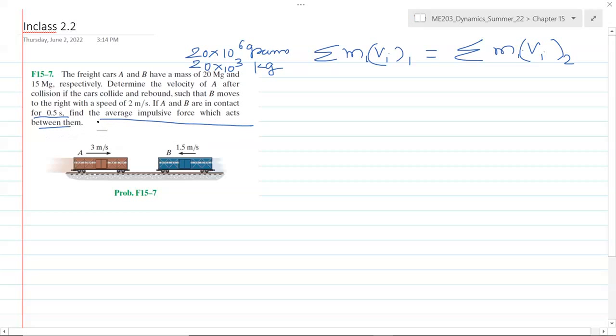There are two parts to the question. Part number one: we've been given v_A1 and v_B1, the velocities or speeds of both cars before impact. After impact, B moves to the right with 2 meters per second. So this was the initial situation, then this impact happens.